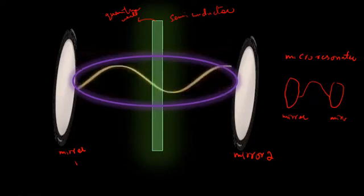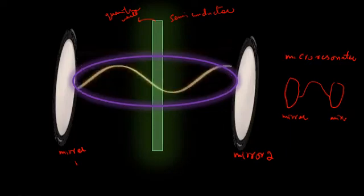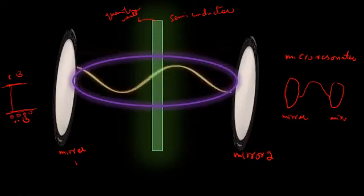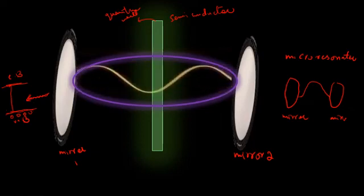This is called a quantum well because it can trap electrons within itself so they cannot escape the surrounding region. In a semiconductor, there is a valence band and a conduction band. Electrons in the valence band are bound, while in the conduction band they are loosely bound. When light of a specific frequency supplies energy to this piece of semiconductor...